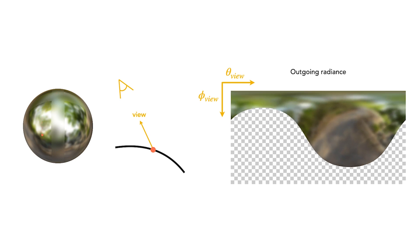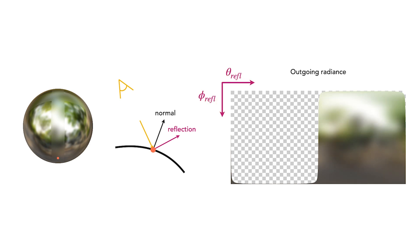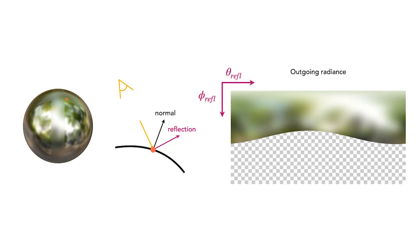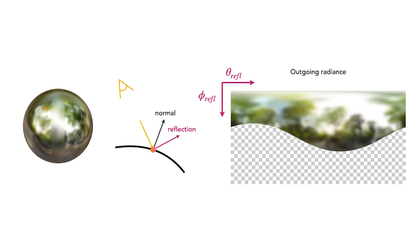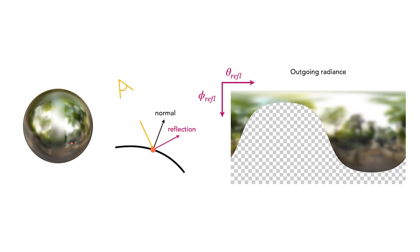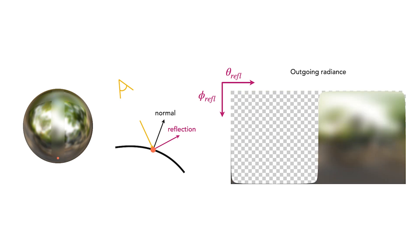One of our key contributions is to use the normal vector at each 3D point and re-parameterize outgoing radiance as a function of the reflection of the view direction about the normal. This re-parameterization makes the underlying function simpler and easier for the network to interpolate. Now it only changes when the orange point moves into the rougher regions of the ball, for which the underlying reflected radiance function is blurred. We introduce a technique that allows the network to easily represent this blurring of outgoing radiance for points with different roughnesses.